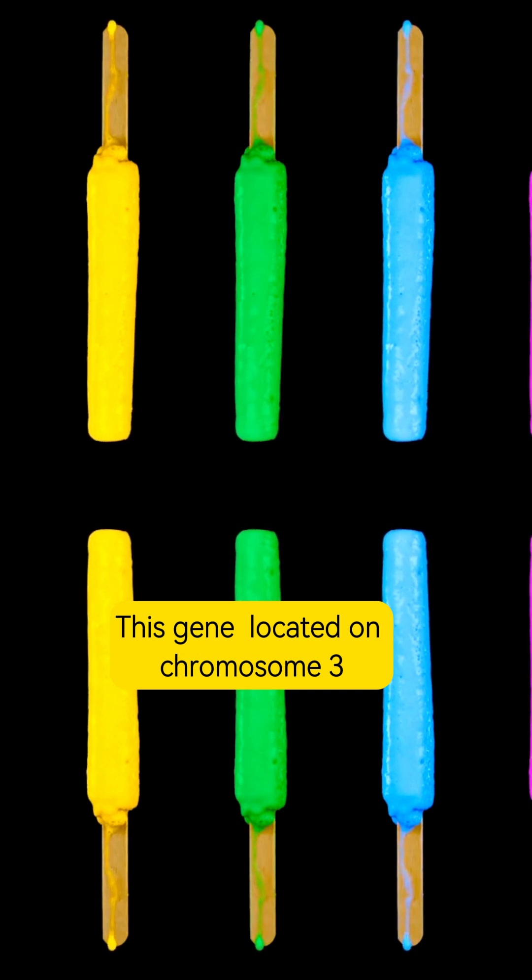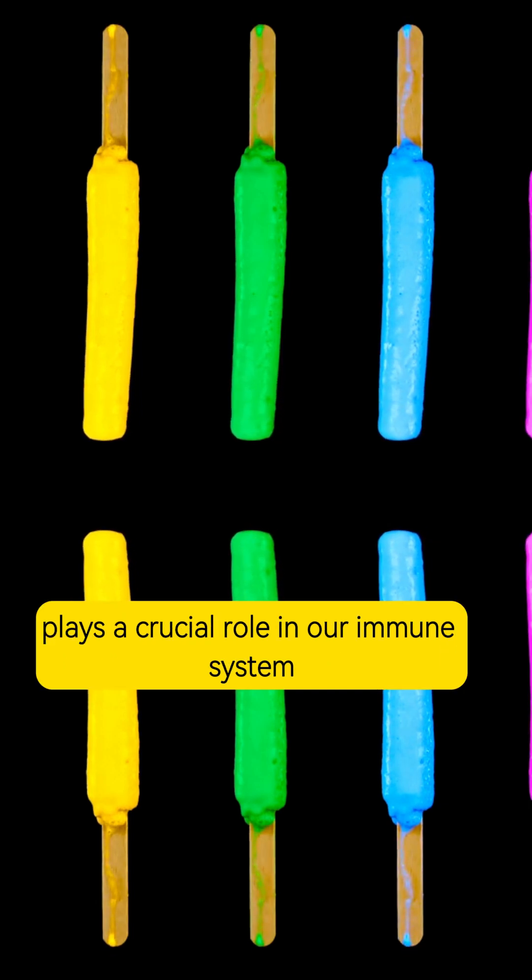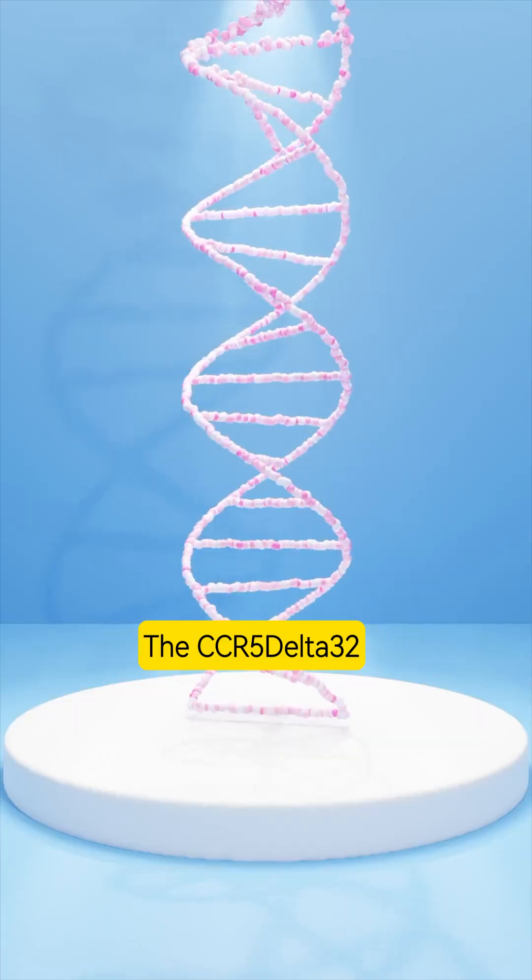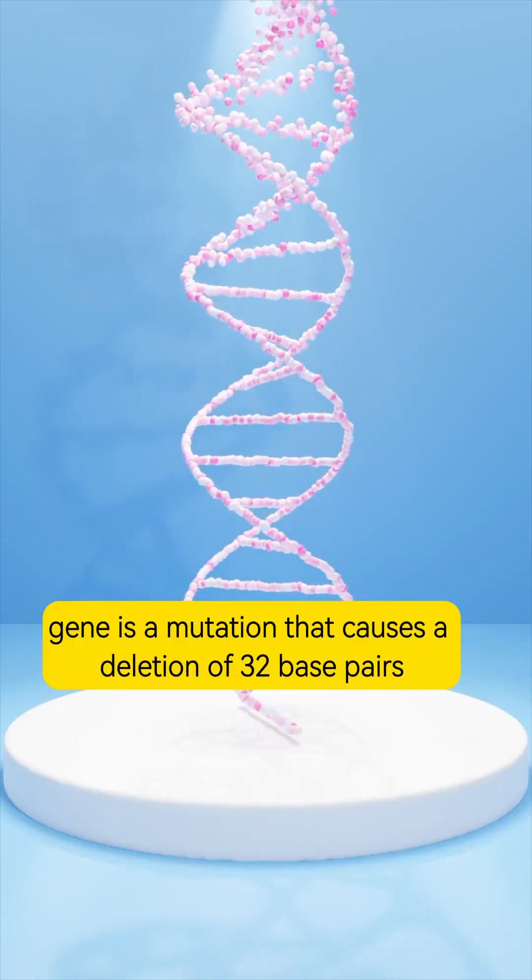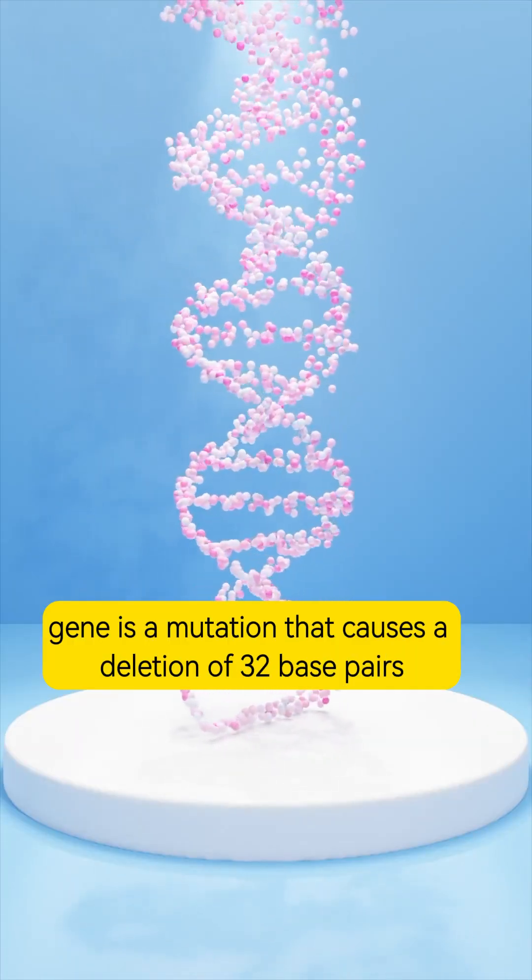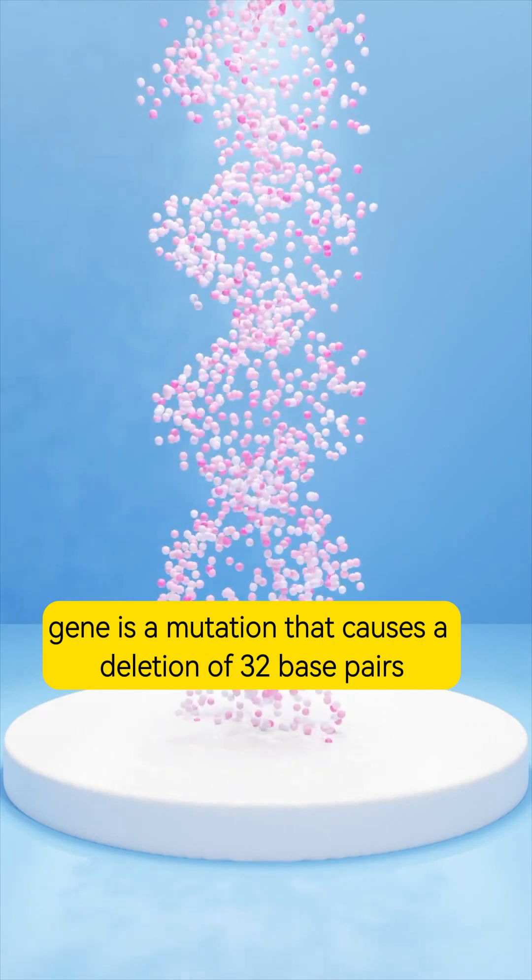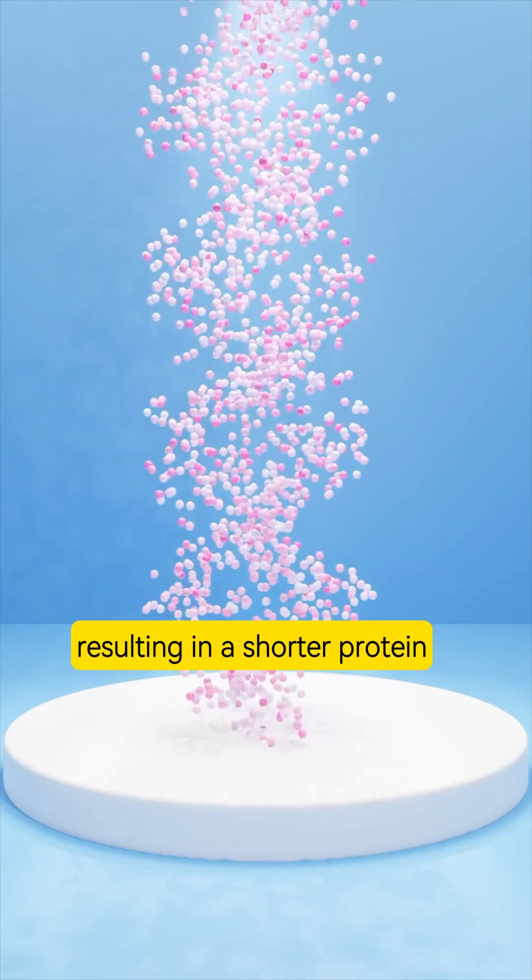This gene, located on chromosome 3, plays a crucial role in our immune system. The CCR5-Delta32 gene is a mutation that causes a deletion of 32 base pairs, resulting in a shorter protein.